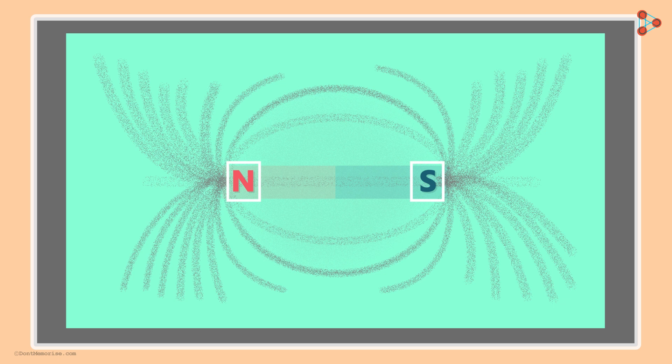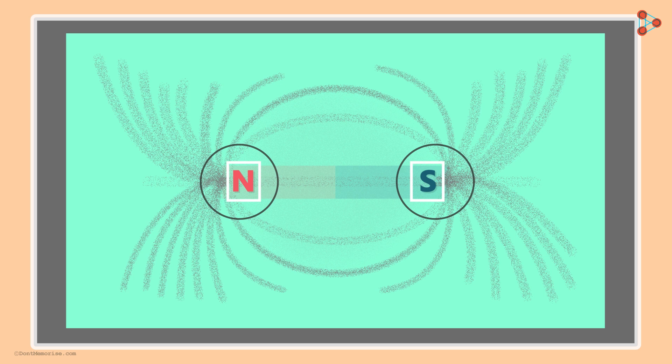First of all, iron filings are nothing but very tiny pieces of iron which is a ferromagnetic material. So they are attracted by a magnet. You will see that more iron filings are gathered at the two specific locations and less elsewhere.